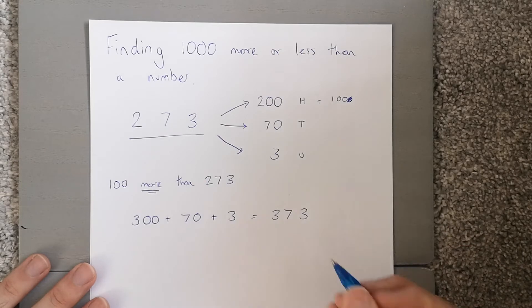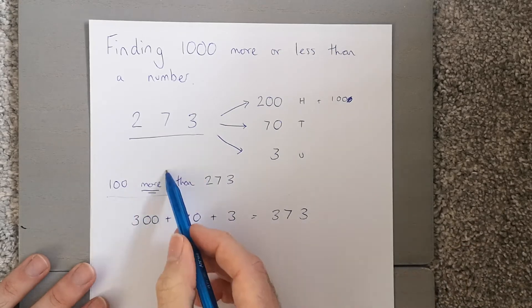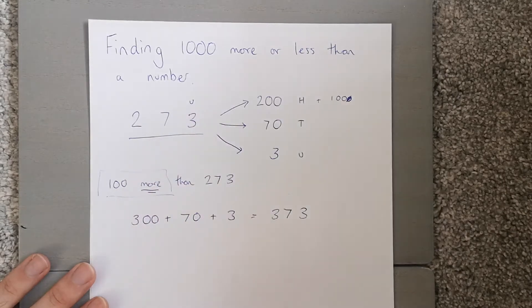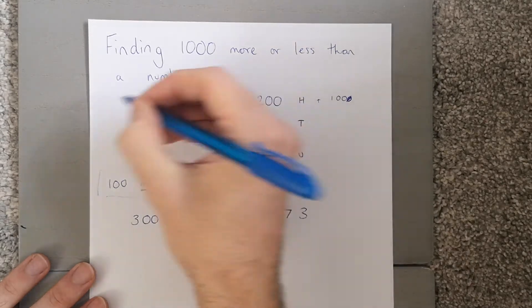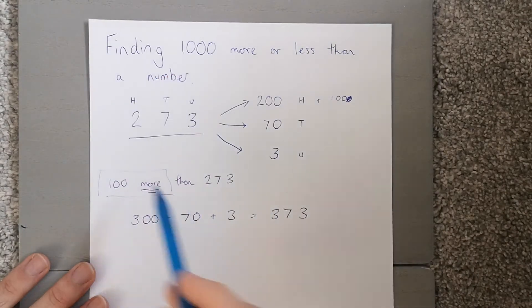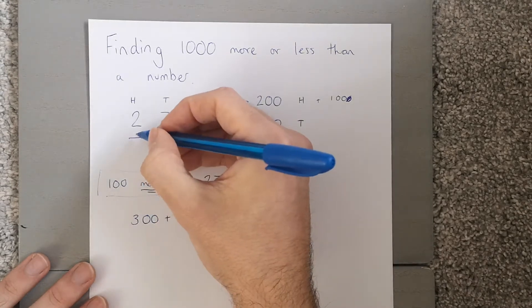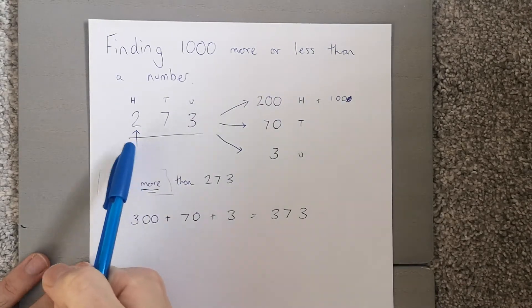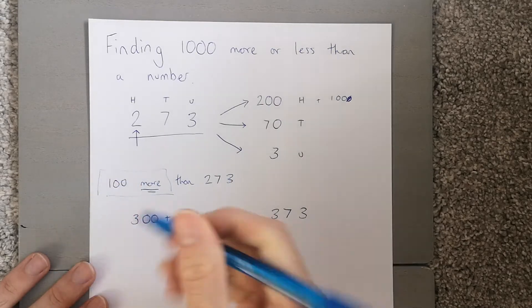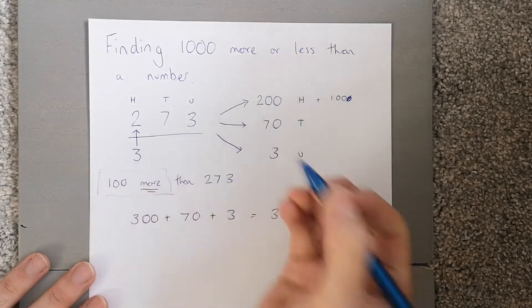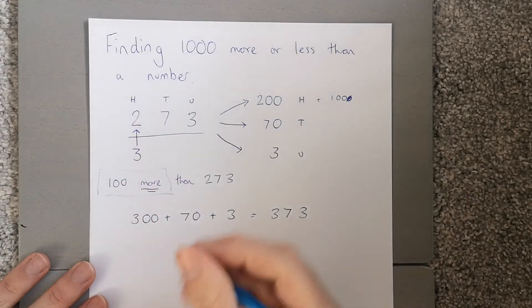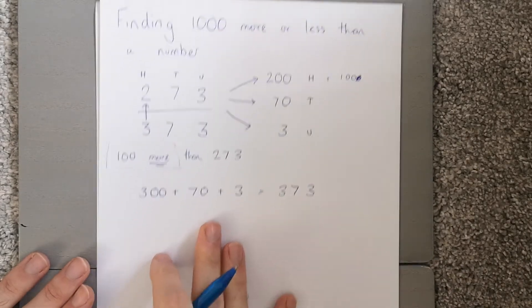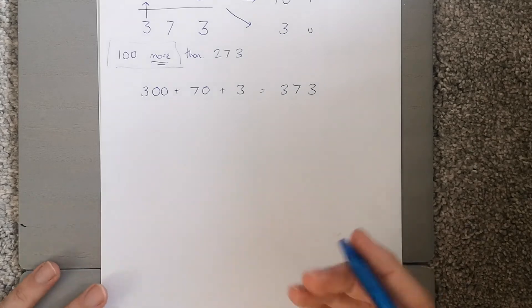To make it easy, if you know you've got 100 more, you know you're looking at the hundreds column. I know I'm looking at that 2, so what I should do is change it to a 3, because I'm 100 more — I'm getting bigger — and then everything else stays the same because nothing else has changed.